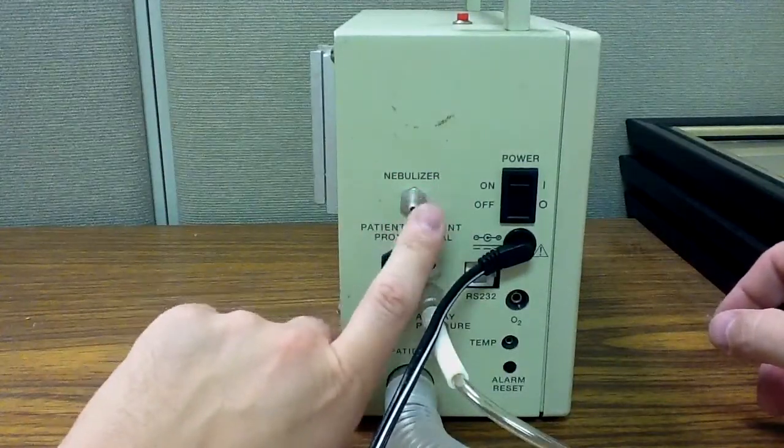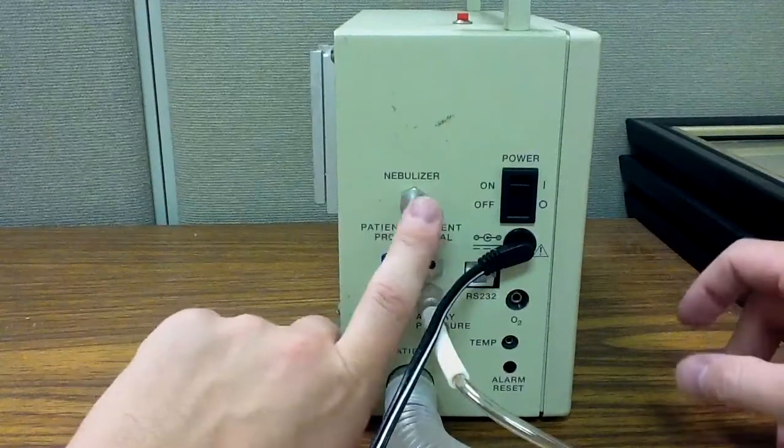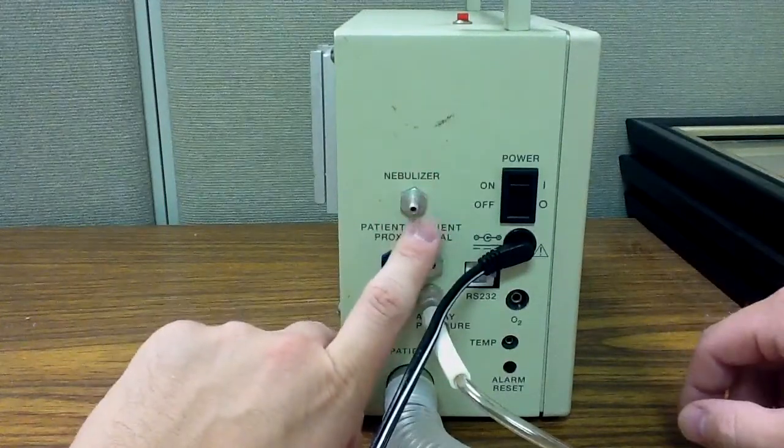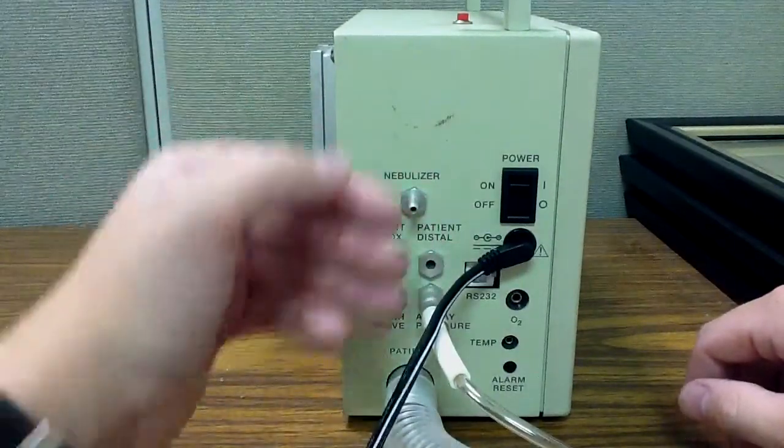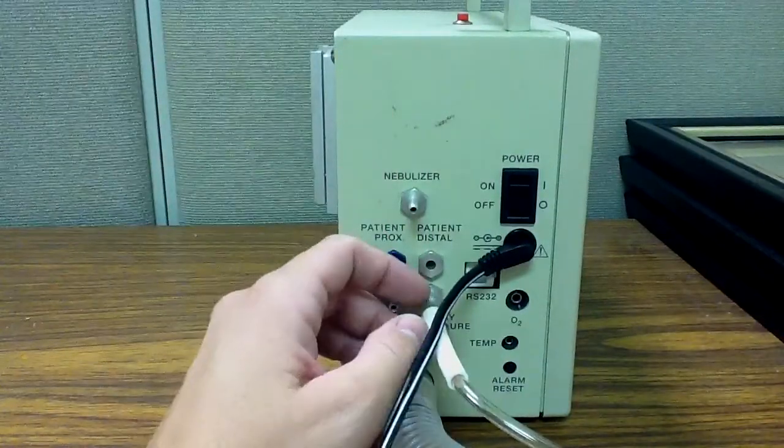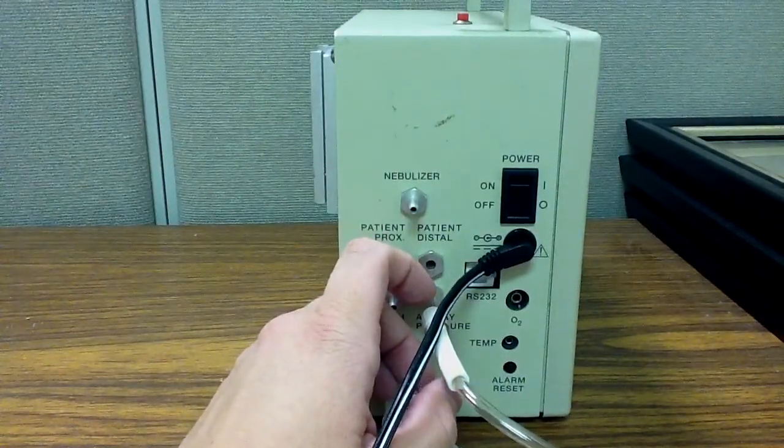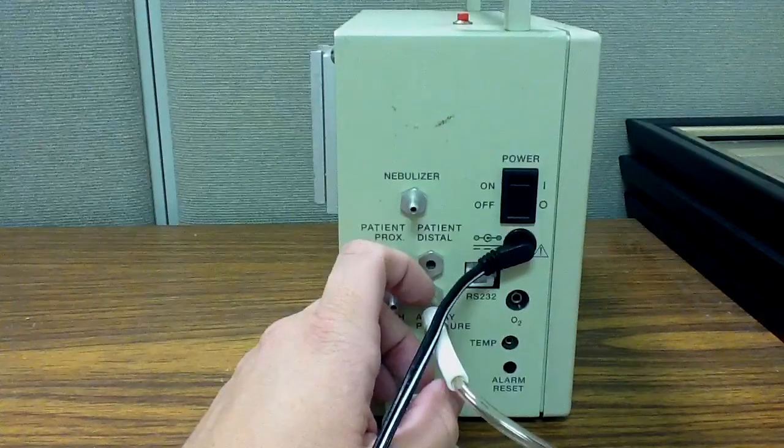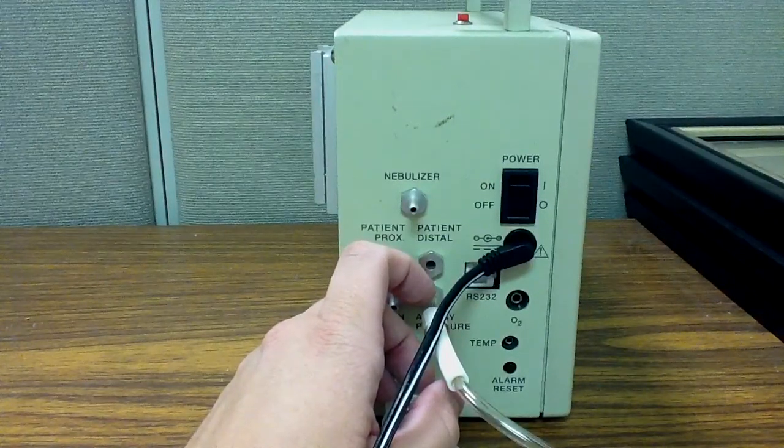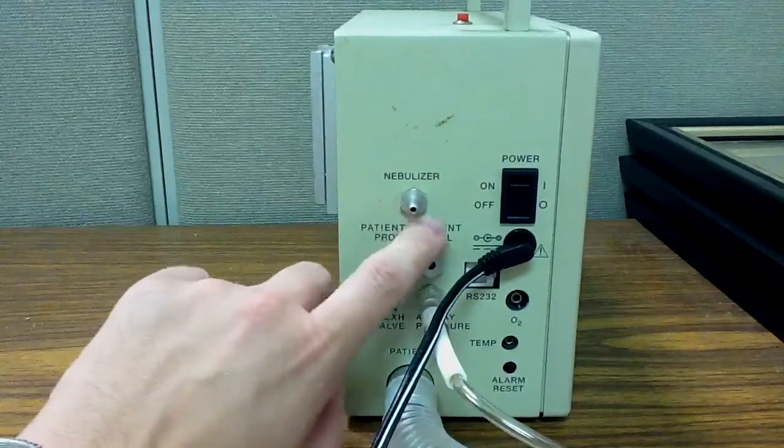Now, if you bypass this option on the ventilator, what you will end up doing is adding, let's say you set your nebulizer at 8 liters, you will add 8 liters of flow to the ventilator circuit. So you're adding flow to the patient and you are going to alter their I time, their E time, and ultimately their I:E ratio while you're doing that treatment.